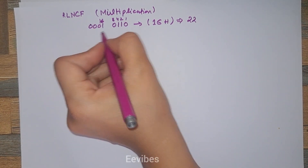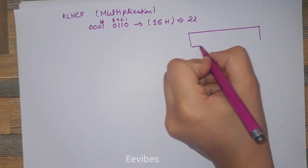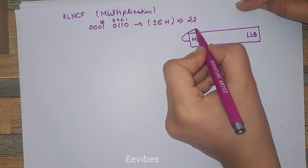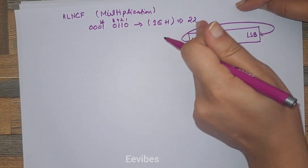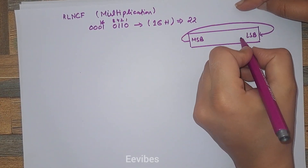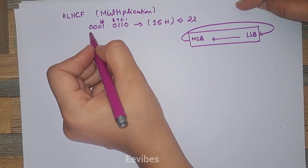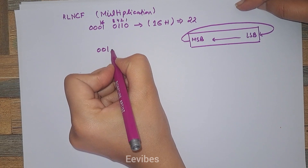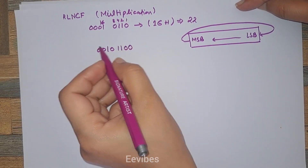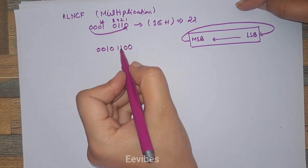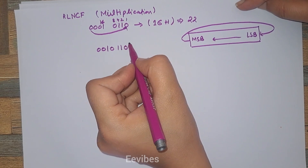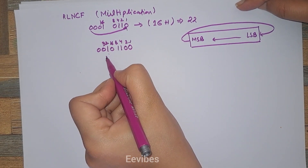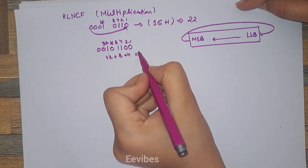When I perform the rotate left instruction, here is the MSB and here is the LSB. What happens is MSB will be copied at the position of the LSB, so you are actually performing the rotate left — moving towards the left. The MSB is equal to 0, so it goes to the LSB position, and you are left with 0, 0, 1, 0, 1, 1, 0, 0. If you look at the decimal value: 32 plus 8 plus 4 equals 44. So 22 has been multiplied by 2 raised to the power of 1.